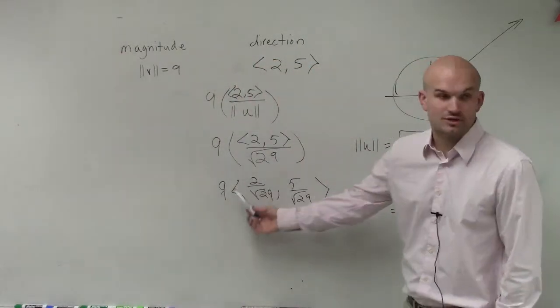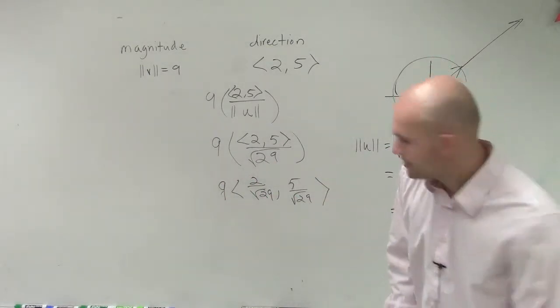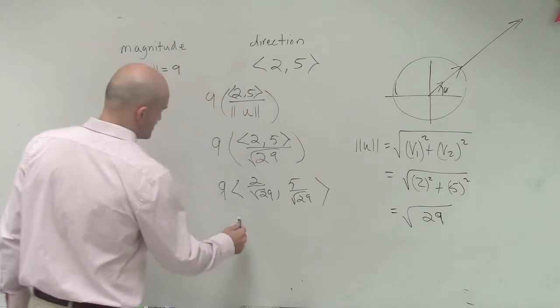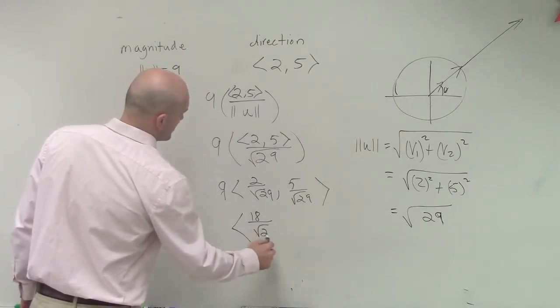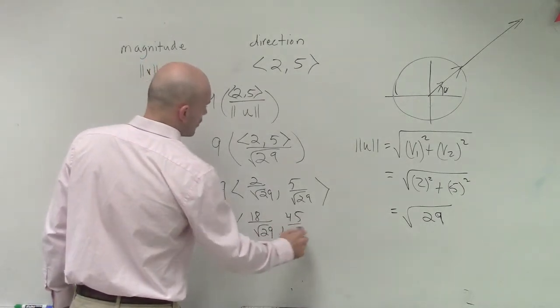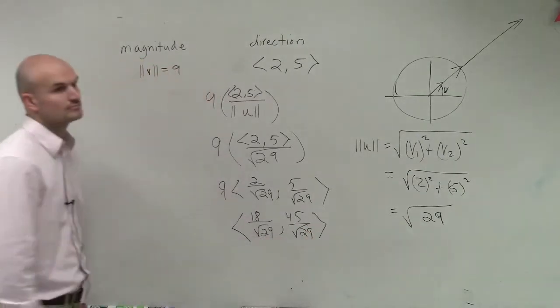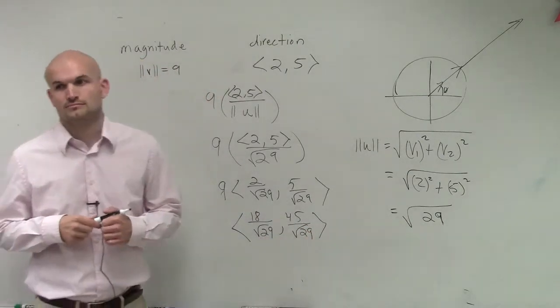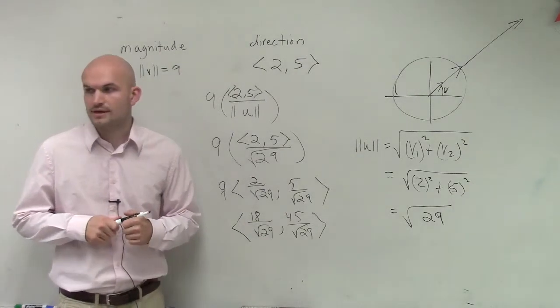Then remember what you do with the scalar? You just multiply that scalar all the way through. And we're looking at my points. So therefore, I just multiply this through. So I have 18 over the square root of 29 comma 45 over the square root of 29. I will just leave those as is right there.